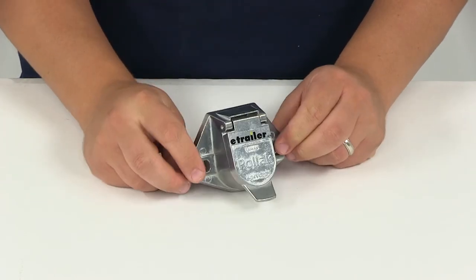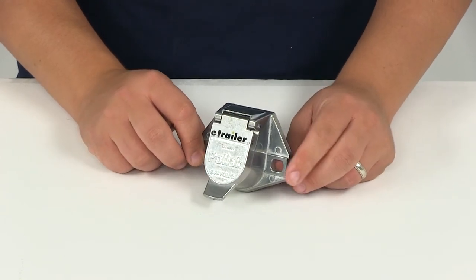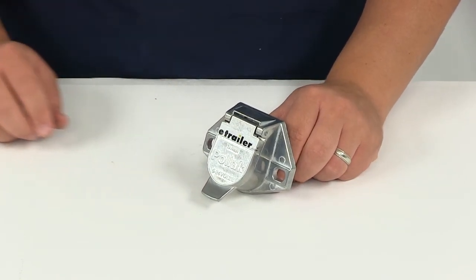That's it for our review of part number PK-11720. This is the Pollock heavy-duty 7-pole round pin trailer wiring socket.